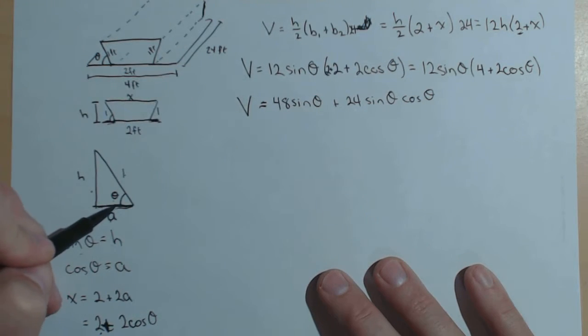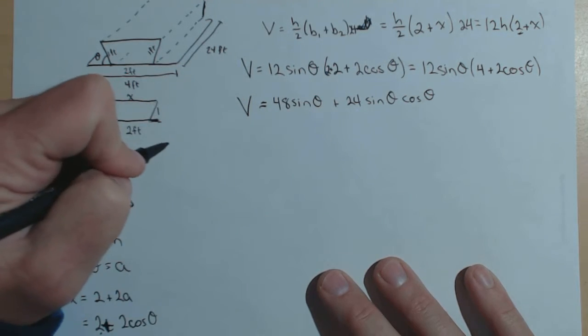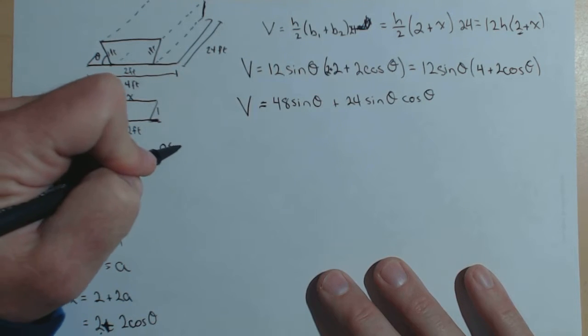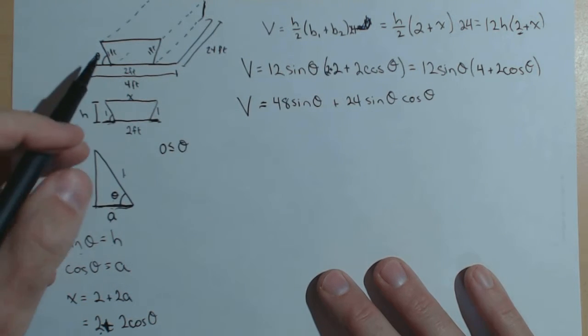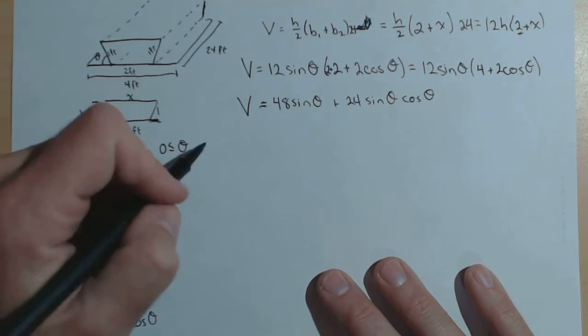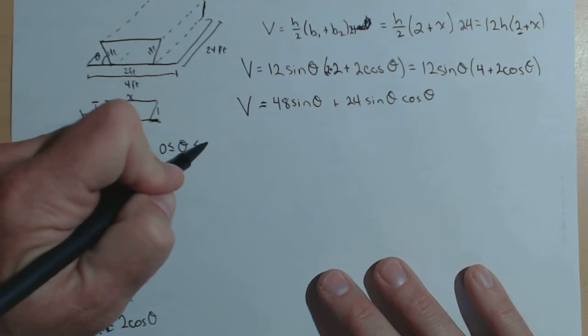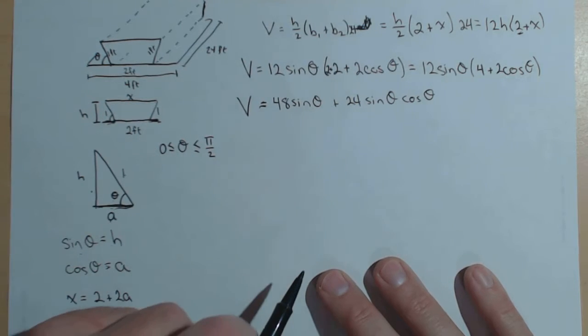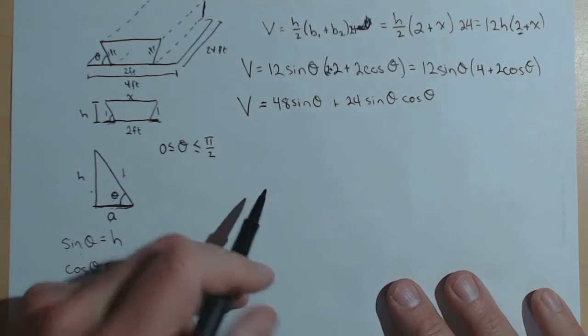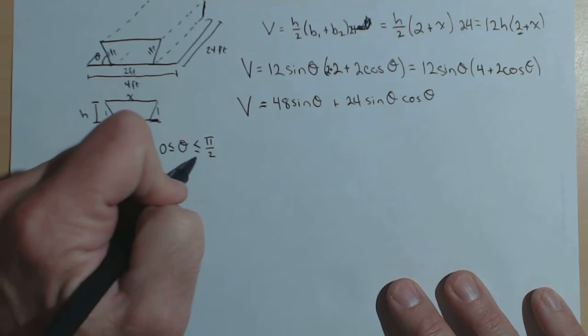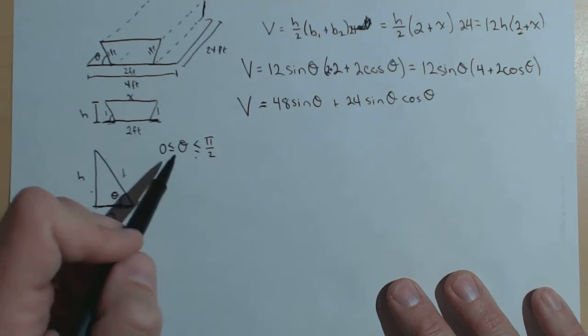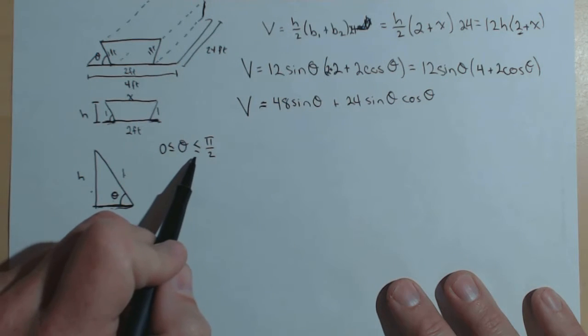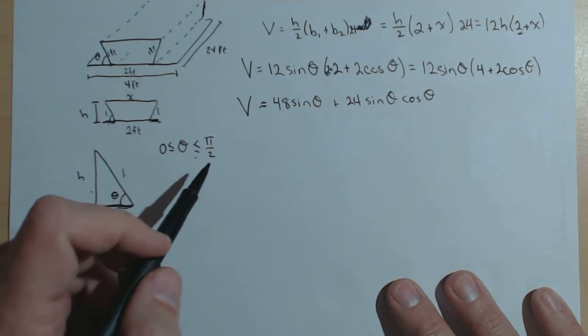Now think about what theta needs to be. Clearly, theta has to be larger than zero. Also, if theta gets up to 90 degrees, we just have a rectangular box. We don't have that trapezoidal shape. So this theta needs to be between 0 and pi over 2. We'll do this problem in radians.